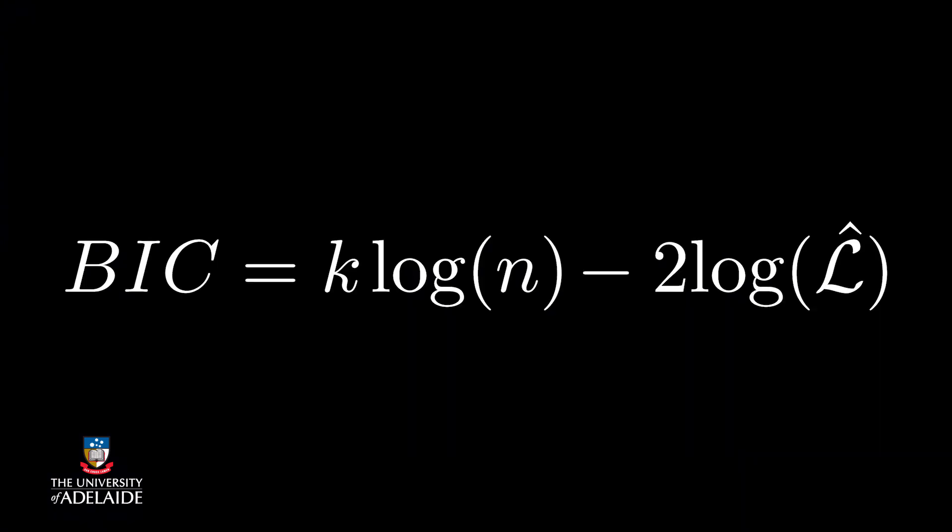BIC is the Bayesian information criterion, developed by Gideon E. Schwartz. We can define BIC as: BIC = K log N minus 2 log L-hat, where log is the natural logarithm and L-hat is the same measure of goodness of fit as in AIC.